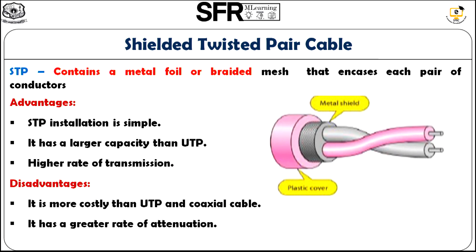Next, we move on to Shielded Twisted Pair cable. In the shielded twisted pair cable, there exists a metal foil or braided mesh around the twisted pair, and around the metal foil the plastic cover exists — that is why it is called shielded twisted pair cable. Regarding advantages, STP installation is very simple, it has larger capacity than UTP, and it has a higher rate of transmission. Regarding disadvantages, it is more costly than UTP and also more costly than coaxial cable. It also has a greater rate of attenuation, meaning greater loss of signals.